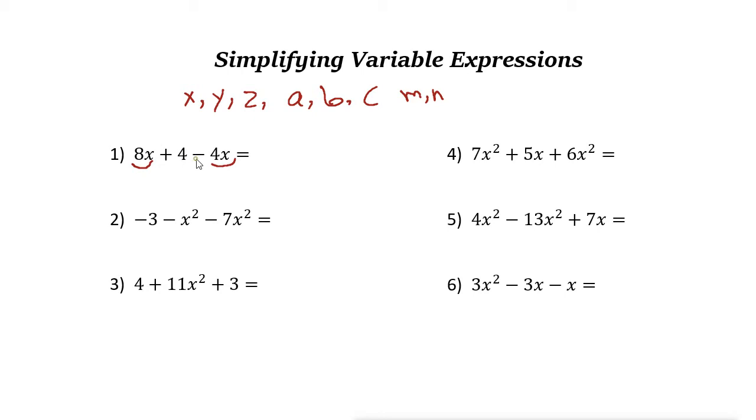But here we have minus 4x or negative 4x. If you combine these two, it is actually 8x - 4x + 4. Now if you simplify 8x - 4x, it is 4x + 4. So the answer is 4x + 4.